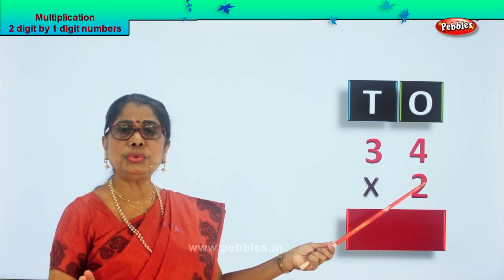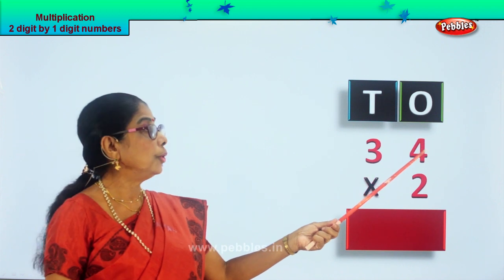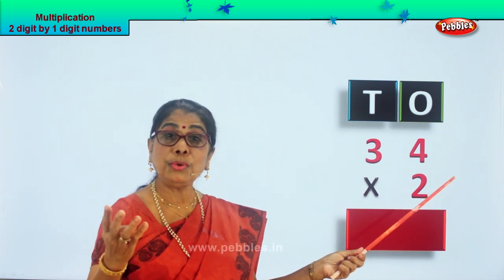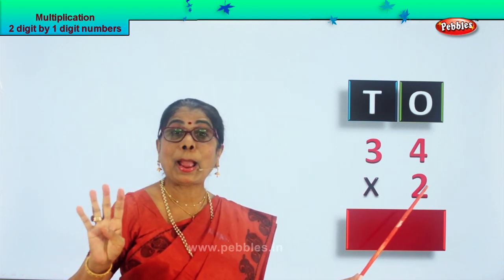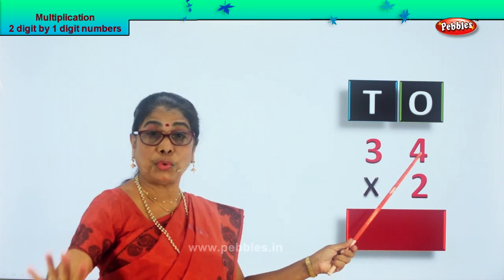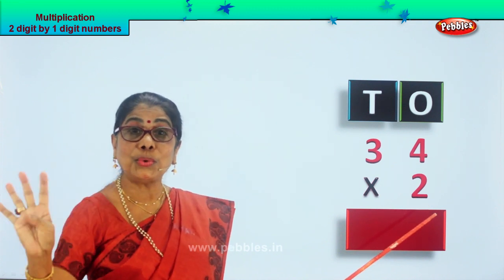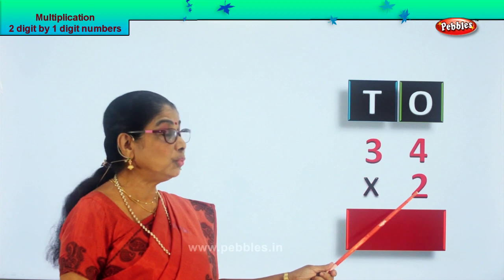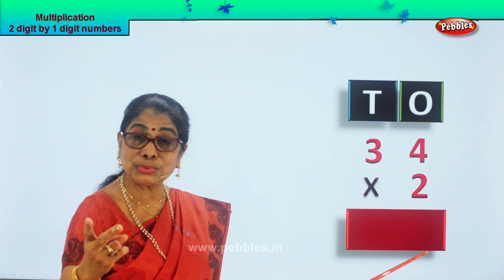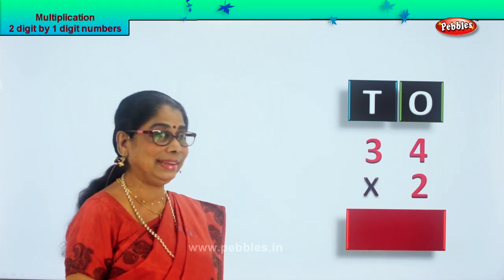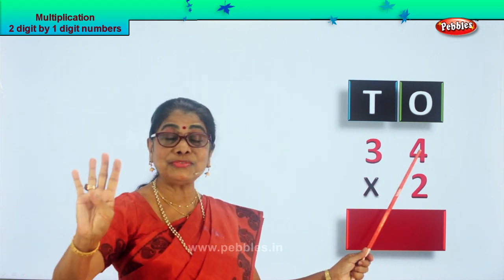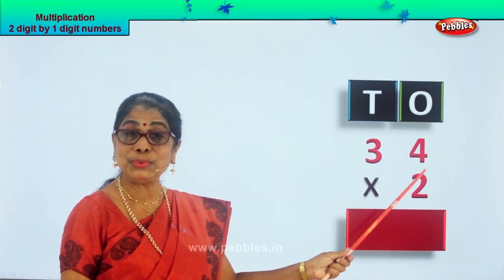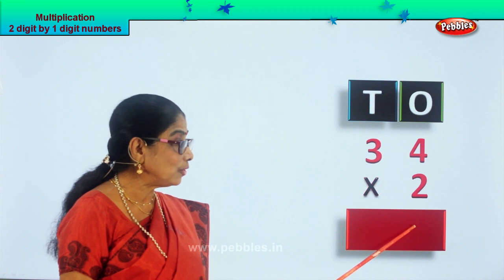Look at this — this is two. Two into four. What is two into four? Four two times will give you what? Multiplication is repeated addition. Four plus four is eight. Four two times is also eight. Two fours are eight. So on the ones place, two multiplied by four — two fours are eight — we write eight here.